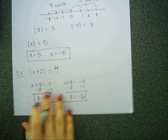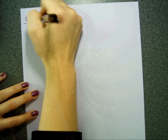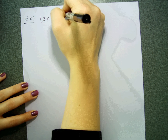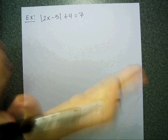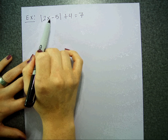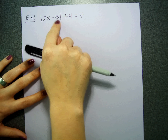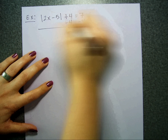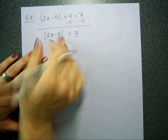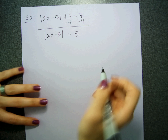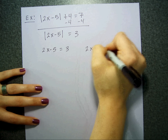Let's do another one. Let's say I have the absolute value of 2x minus five, plus four, equals seven. I have stuff inside the absolute value — that's fine. But I have this plus four on the outside. In order to use our property to break it into two equations, the absolute value has to be by itself. So I subtract four from both sides, and now I have the absolute value of 2x minus five is equal to three. Now I can break it apart: 2x minus five is equal to positive three, or 2x minus five is equal to negative three.